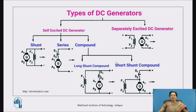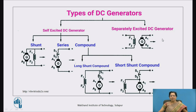In a separately excited DC generator, the field winding is separated from the armature winding. The armature winding and field winding are independent of each other.